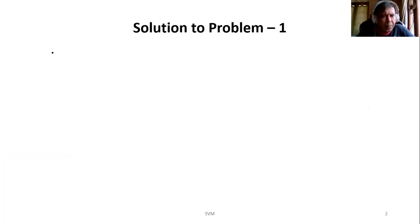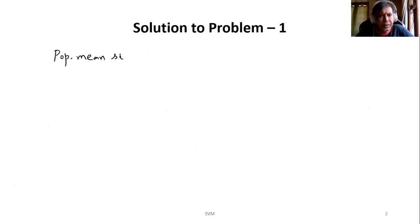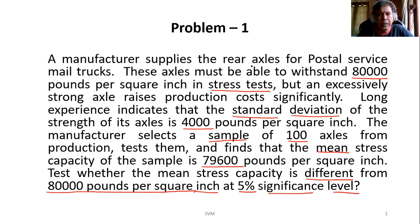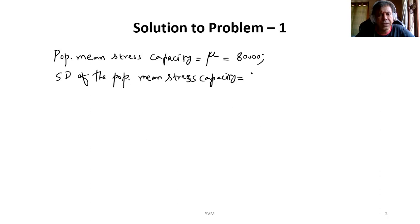What is given: the population mean — since the stress capacity is related to the population mean, we call it mu, which is given as 80,000. Then, going back, the standard deviation for the population is given as 4,000. Since it is the population standard deviation, it is denoted by sigma — as we have already seen in our previous video about notations used for population parameters.